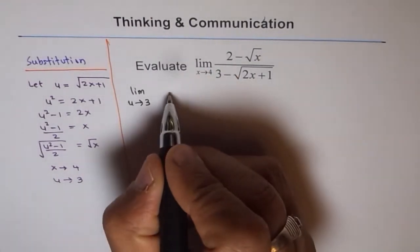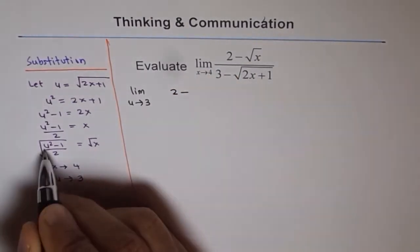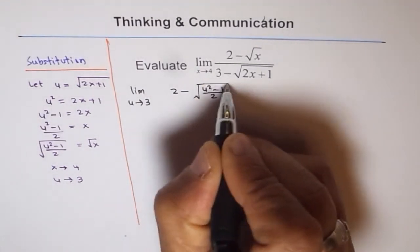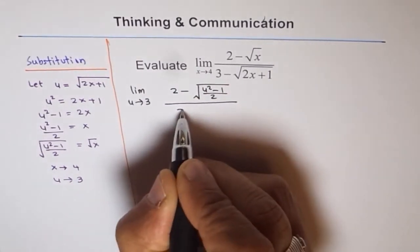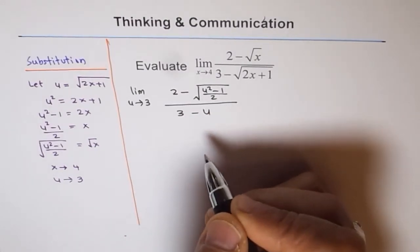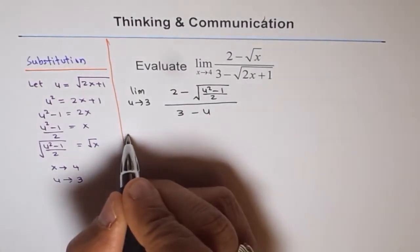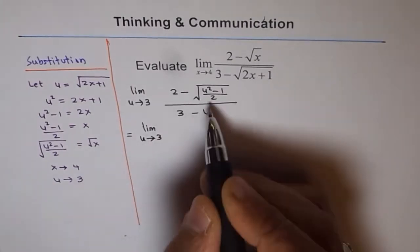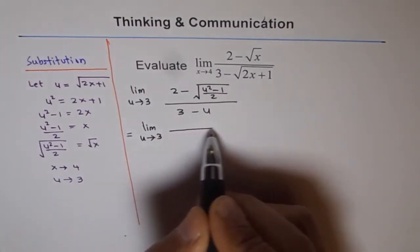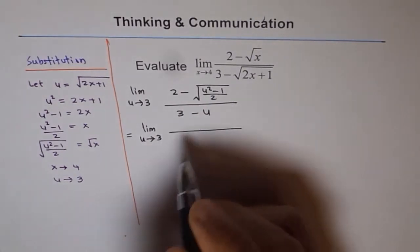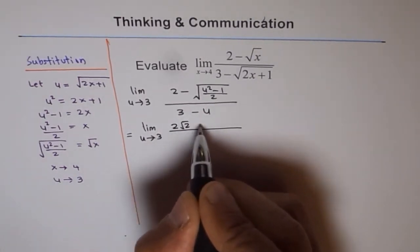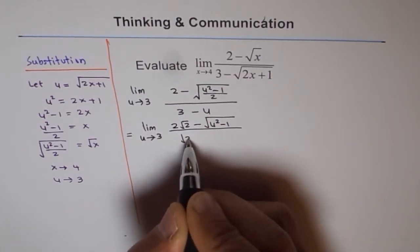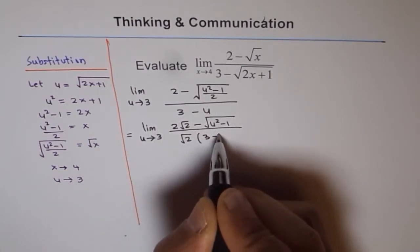Continuing with our question: in the numerator we have 2 minus, and instead of square root x I write square root of (u squared minus 1) over 2. The denominator becomes 3 minus u, which is simpler — that is a relief. Let me bring the square root 2 into the denominator and multiply through.